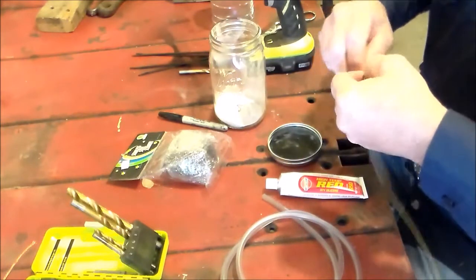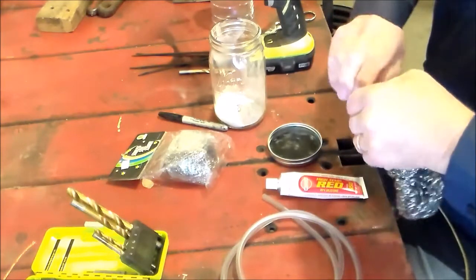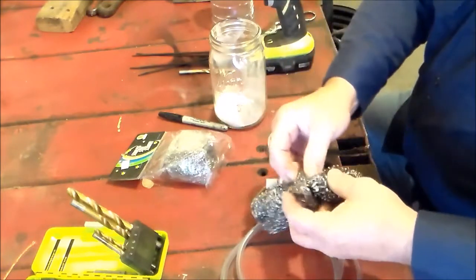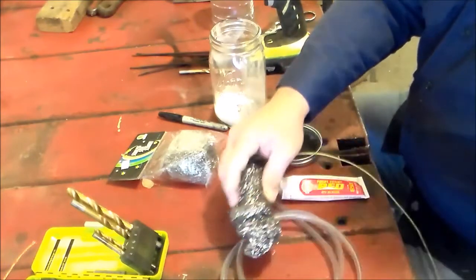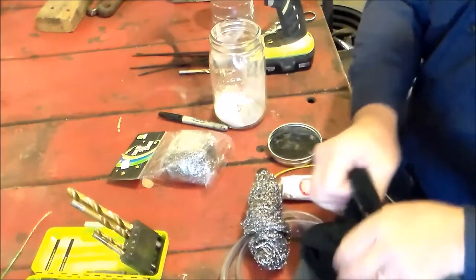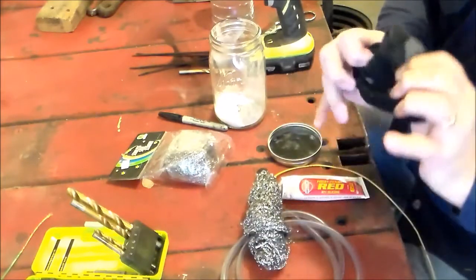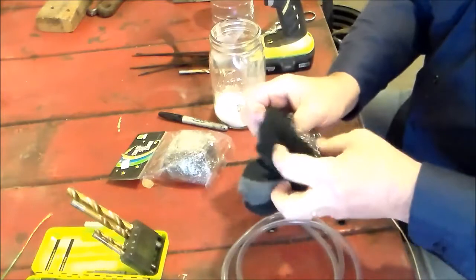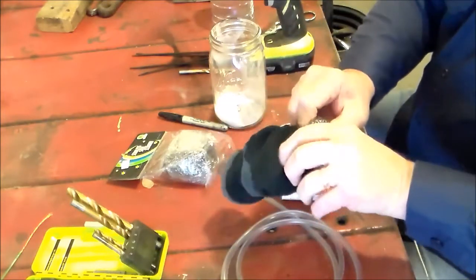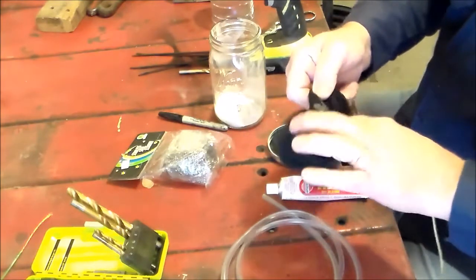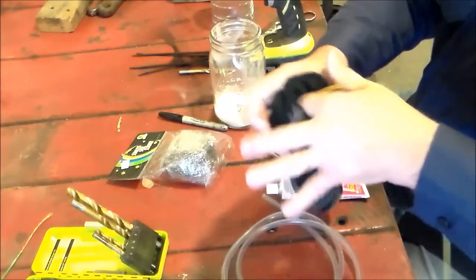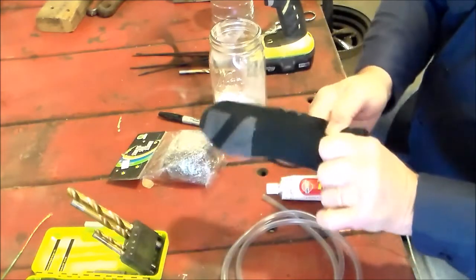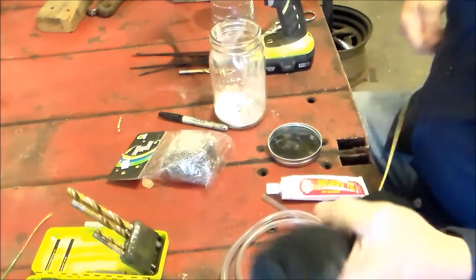And it doesn't have to be a soldered connection or anything. So that is all attached. Then you take a sock. Make sure it doesn't have any holes in it. So you've got your sock with the steel wool pad on the inside and the wire attached to it.